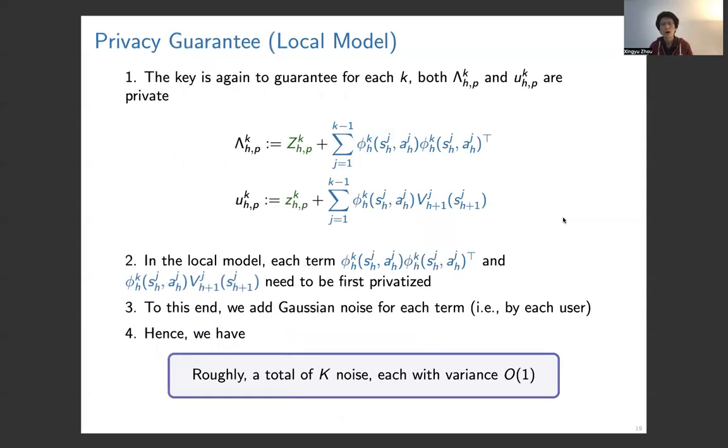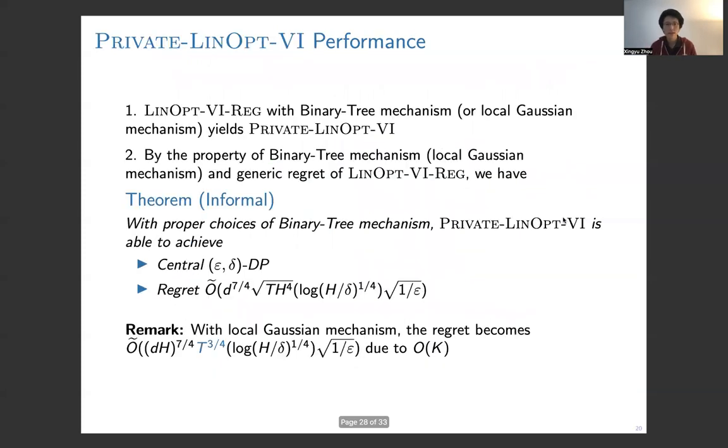But on the other hand, in the local model, the central server cannot have direct access to the user's data, so each user has to privatize her data directly at its local site. For each blue term, we have to privatize it by adding independent Gaussian noise. If we have k summations, then we have a total of k noise, each with variance of one. Comparing the central model and local model, we can see that the order of the noise is different. Putting them together, if we choose the regularizer as a binary tree mechanism or local Gaussian mechanism, we have our PRIVATE-LINOPT-VI algorithms. We have the central privacy guarantee and regret bound of square root of T. But if we choose local Gaussian mechanism as the regularizer, we will have T to the power 3/4 regret.